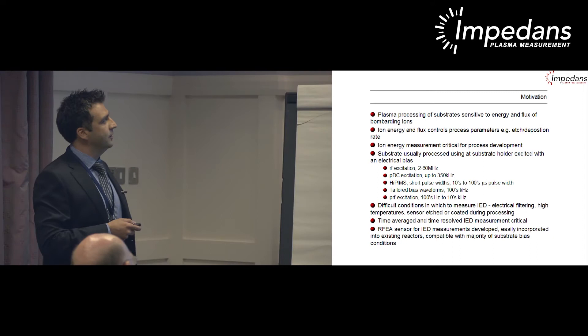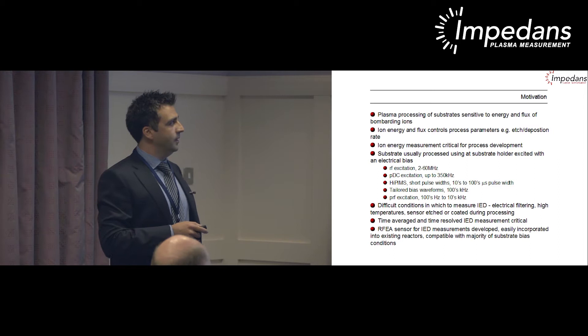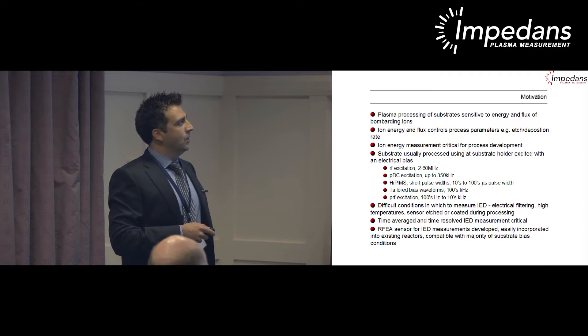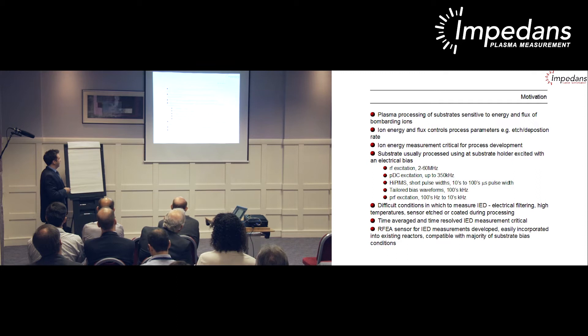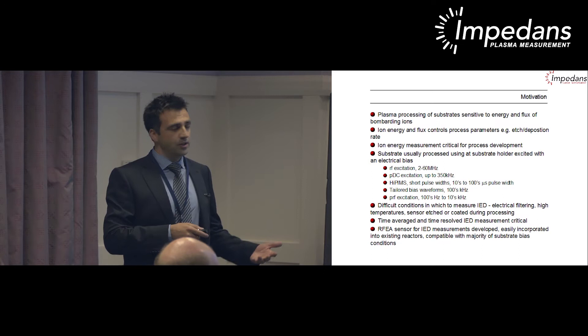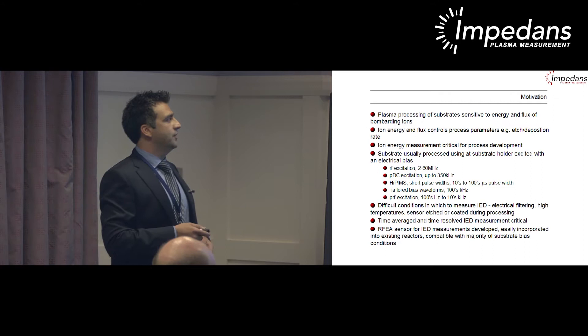Other bias types include high-PIMS with very short pulses of tens to hundreds of microseconds, tailored bias waveforms for more control over bombarding ion energy, and pulsed RF applications typically pulsed in the hundreds to tens of kilohertz range with an RF component on top. These are quite difficult conditions for measuring ion energy distribution. One must think about electrical filtering of the bias signal, high temperatures in the discharge, and sensor lifetime—it may be etched away or coated during processing.